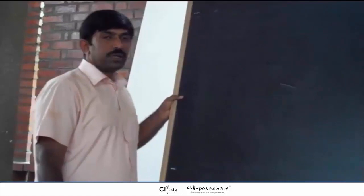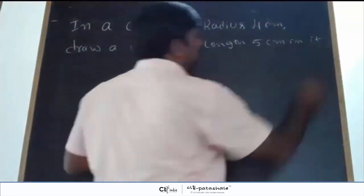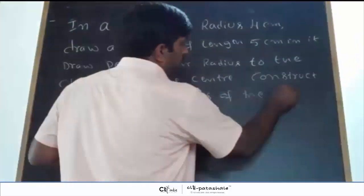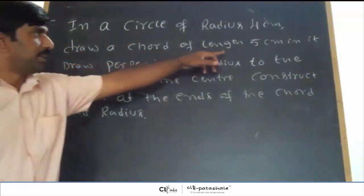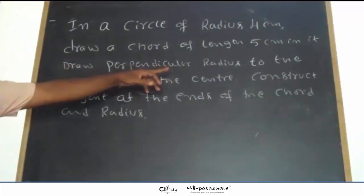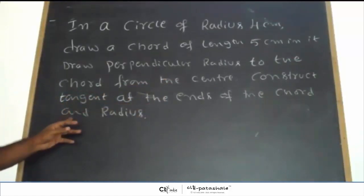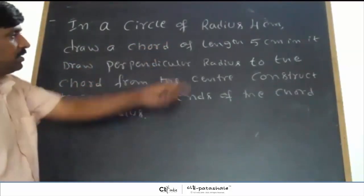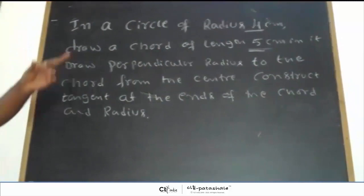In this class we will learn about construction of tangents. First we will take our problem. In a circle of radius 4 cm, draw a chord of length 5 cm. Draw a perpendicular radius to the chord from the center, then construct tangents at the ends of the chord and radius. Radius is given as 4 cm and length of the chord is given as 5 cm.